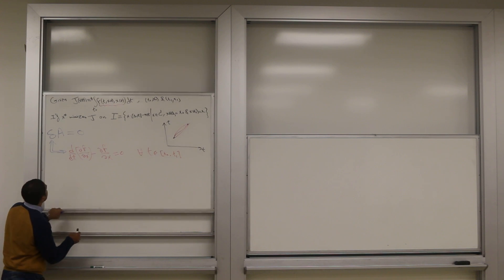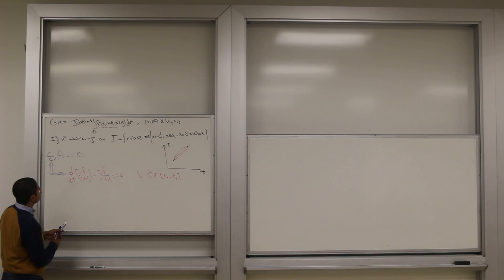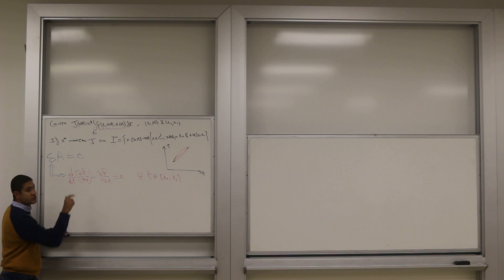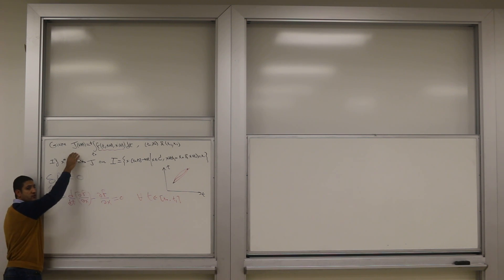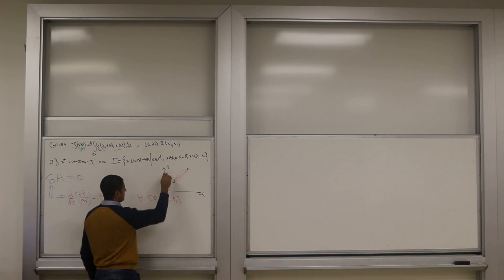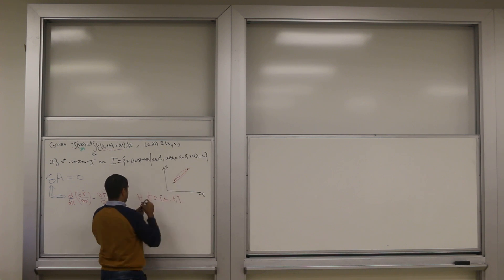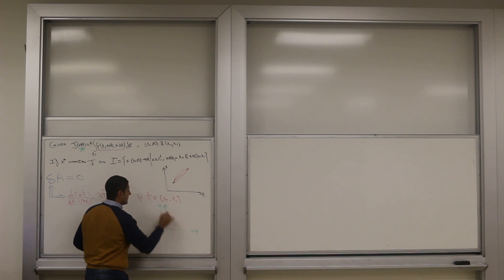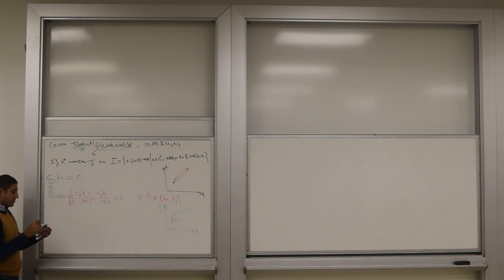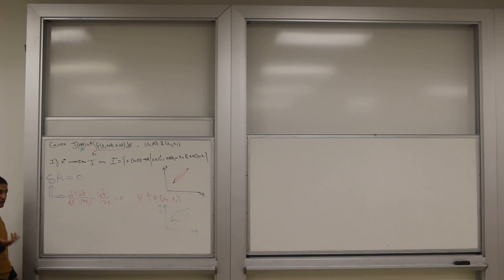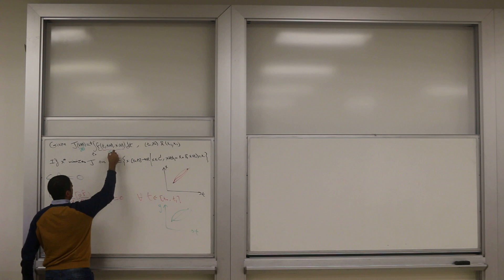I'm going to introduce something. What if our J cost depends not only on a function x but another function y? It has to pass through another two points, and we're looking for its shape that, together with x, they both minimize the cost function. It's as if in ordinary calculus we have a function of two values instead of one. So x and y are both functions, and there's y of t and y-dot of t in the dependence.